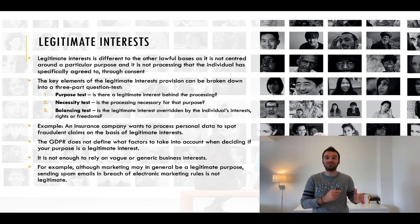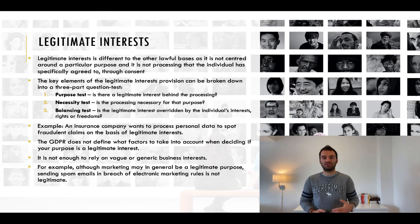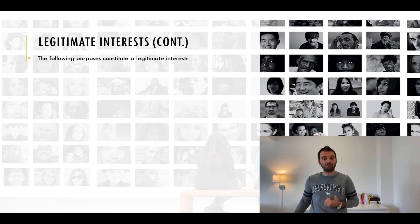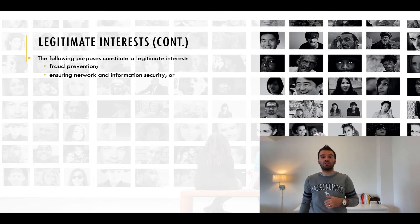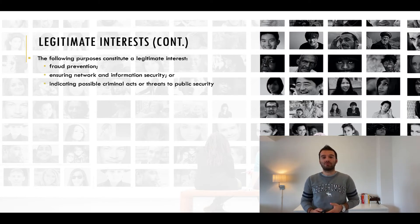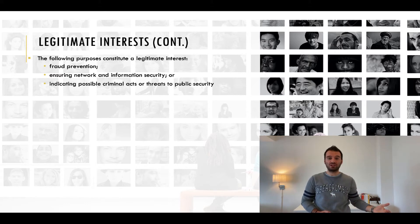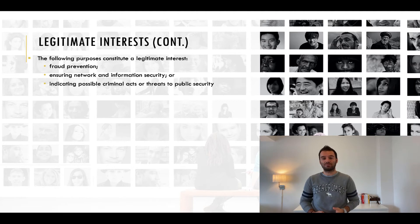The GDPR does not have an exhaustive list of what purposes are likely to constitute a legitimate interest. However, the recitals do say the following purposes constitute a legitimate interest: fraud prevention, ensuring network and information security, or indicating possible criminal acts or threats to public security. Therefore, if you are processing for one of these purposes, you may have less work to do to show that the legitimate interest basis applies.